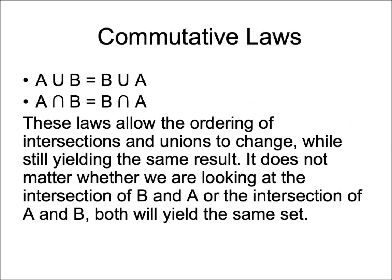Next, we have the commutative laws. These laws allow the ordering of intersections and unions to change while still yielding the same result. So what this means is that the union of A and B can be flipped to the union of B and A, and those statements are both equivalent.